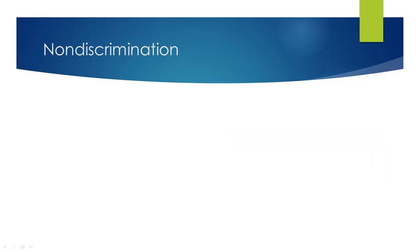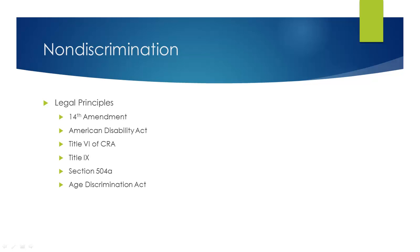In terms of non-discrimination, many of the same legal principles that apply to admissions also apply to financial aid: the 14th Amendment, the Americans with Disabilities Act, Title VI, Title IX, Section 504A, and the Age Discrimination Act. Federal financial aid cannot be discriminated against based on race, sex, disability, gender, or age — it needs to be open to all. The same compelling state interest principle could apply if there is a compelling state interest to give financial aid to one group over another, and that will be discussed more specifically in the context of allocations of funds.